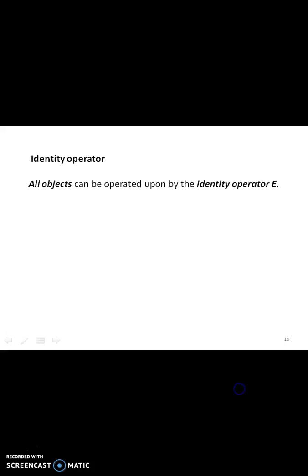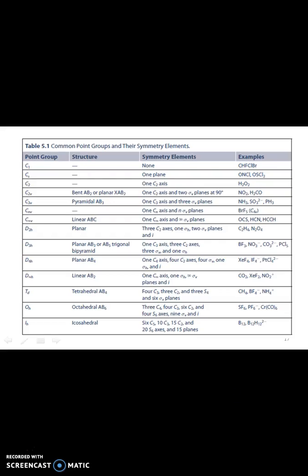Finally, the identity operator. All objects can be operated upon by the identity operator E. The operator E leaves the molecule unchanged. Here, these are some of the list of symmetry elements containing the molecule. For example, hydrogen peroxide, NO2, BrF5, C2H2, BF3, xenon fluoride, carbon dioxide, methane, sulfur hexafluoride, and other borates. The structure and the types of symmetry elements present in the molecules are listed in the particular table.